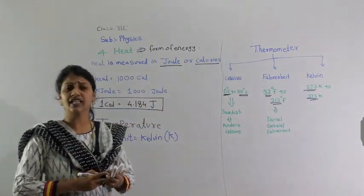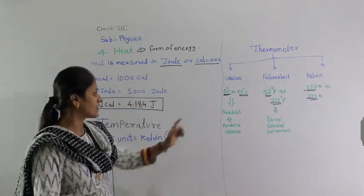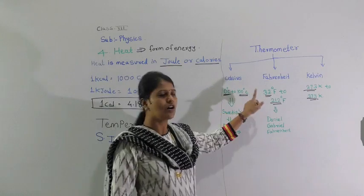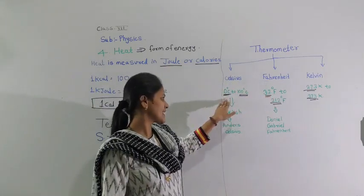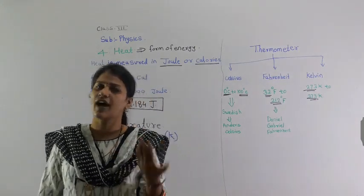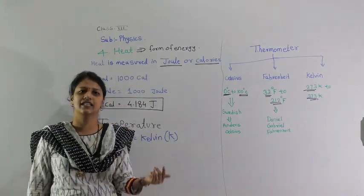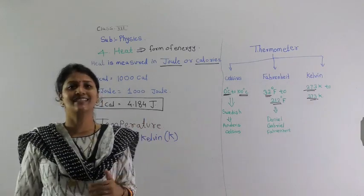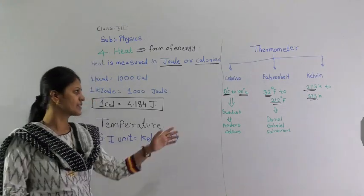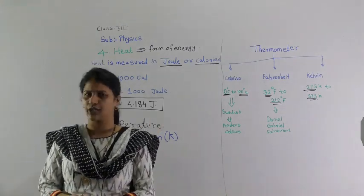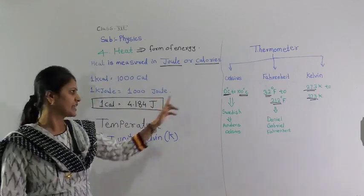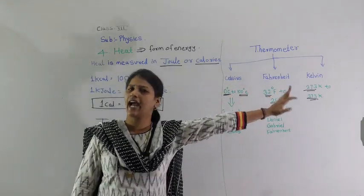There are some conversions — when you convert 0°C to Fahrenheit, you get 32°F. There are formulas to convert Celsius to Fahrenheit, Fahrenheit to Celsius, Kelvin to Celsius, and Celsius to Kelvin. We will see those conversions in the next video. We have learned the three types of thermometer scales: Celsius, Fahrenheit, and Kelvin.